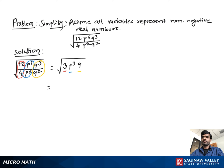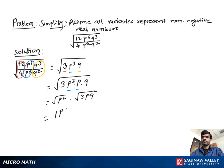We rewrite the expression as square root of 3 times P squared times P times Q. Then we separate it into square root of P squared times square root of 3PQ, which simplifies to the absolute value of P times square root of 3PQ.